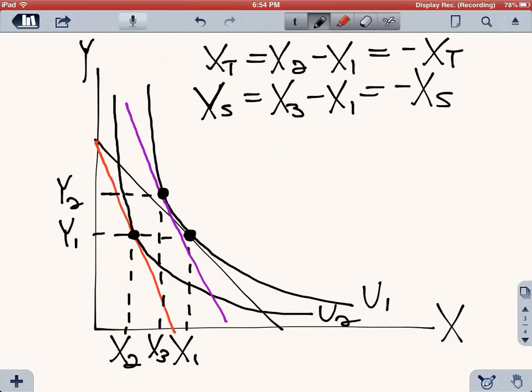Now since the total effect is made out of the income effect, if we bring the consumer back to x2, that will be the income effect. So the income effect is the leftover. So the income effect will be the difference between x2 minus x3.